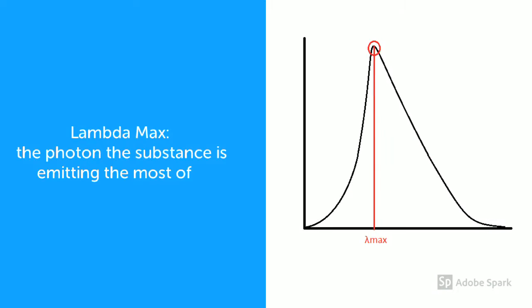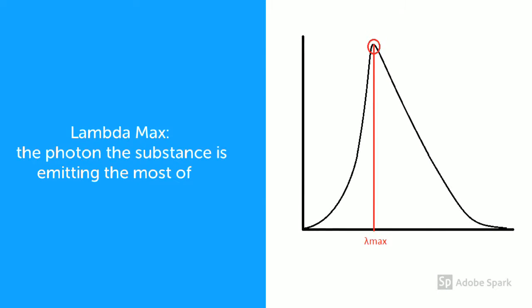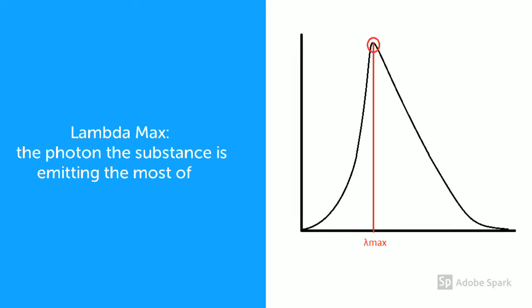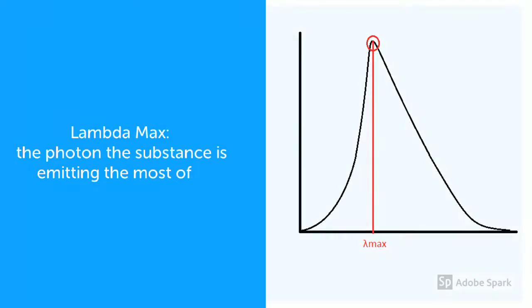In emission spectroscopy, lambda max is the wavelength of photons, particles of electromagnetic radiation, of which the substance is emitting the most.